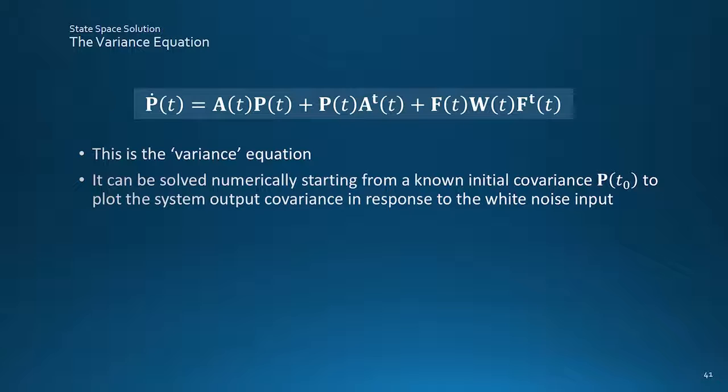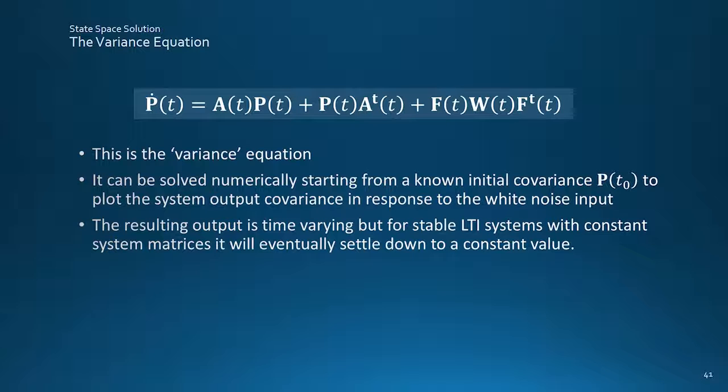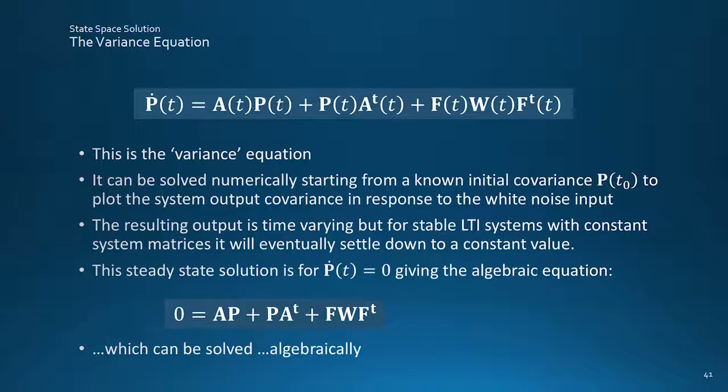It's the infamous variance equation, and the good news is that it's possible to integrate this numerically from a known initial condition to give the solution for the output variance of a dynamic system with system matrix A and input matrix F, driven by white noise of strength W. The response will be non-stationary, but if the system is stable, it will eventually settle down to a constant noise variance, where the derivative term is zero.